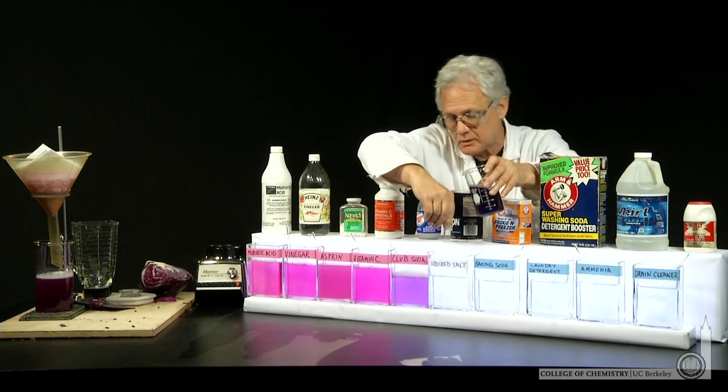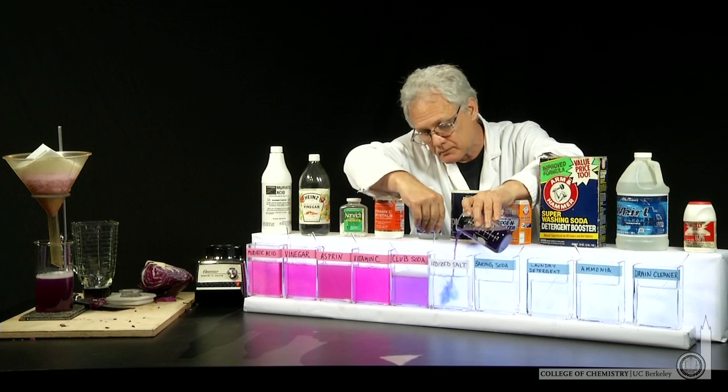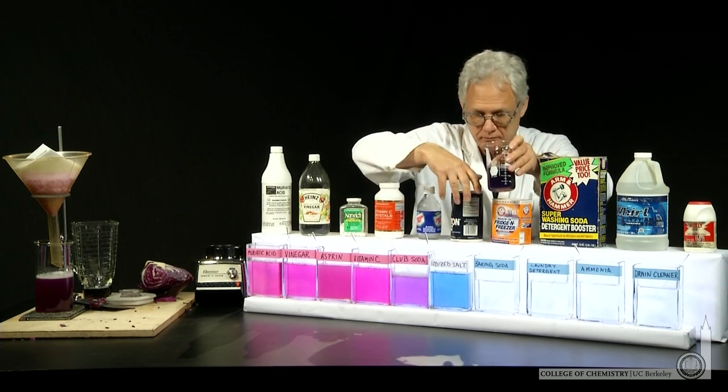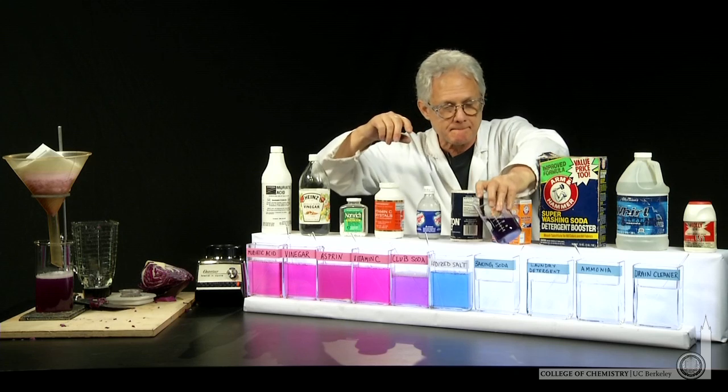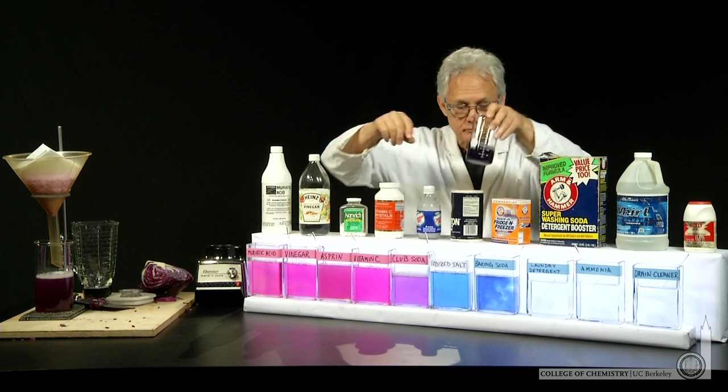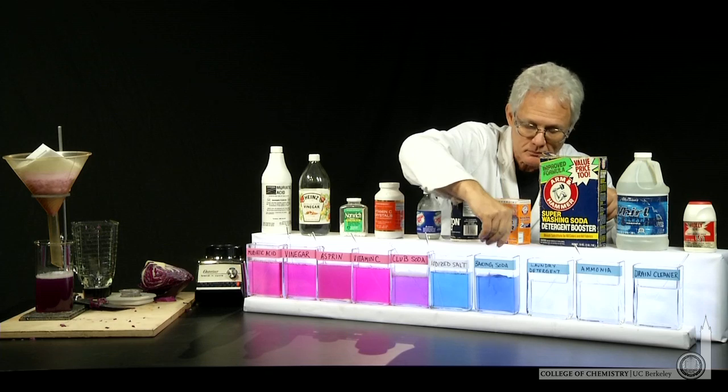Iodized salt, this will be pH 7-ish, so here's pH 7 cabbage juice. And baking soda, slightly basic, pH 7-8, slightly darker blue.